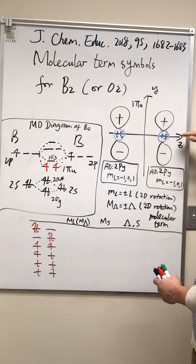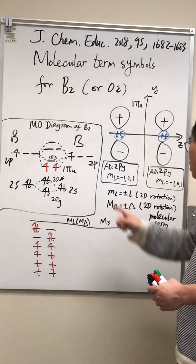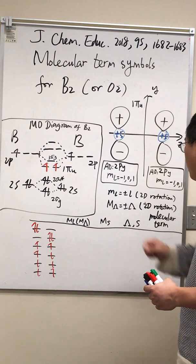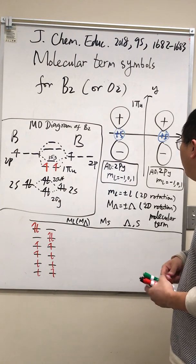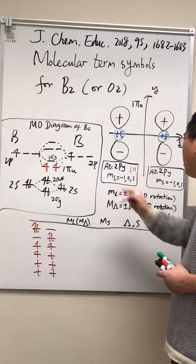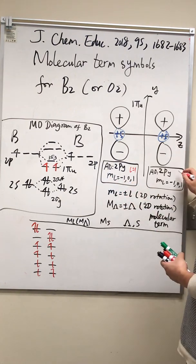Let's say this is the Z direction. If we're talking about the atomic orbitals, the P orbitals has L equals one and M sub L equals minus one, zero and one. Same here.